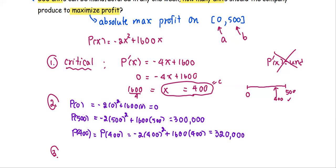After we got all three numbers, we can see that the maximum profit occurs at x = 400.